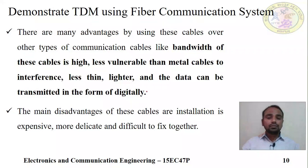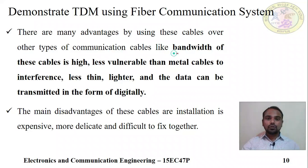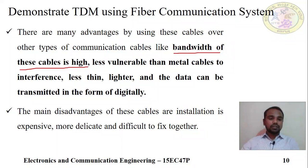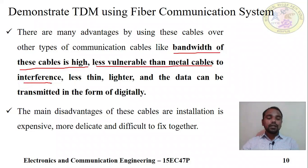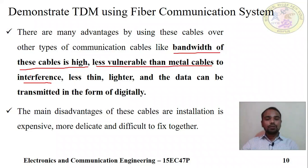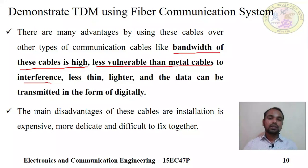Why does fiber optic cable have more importance compared to copper cable? Because the bandwidth of fiber optic cable is high — we can send a large amount of signal. It is less vulnerable to electromagnetic interference (EMI). Copper cable is more susceptible to electromagnetic interference, whereas fiber optic cable is less vulnerable, meaning it has less interference effect. Fiber optic cable is also very thin and very light in weight, and data is transmitted in digital form.